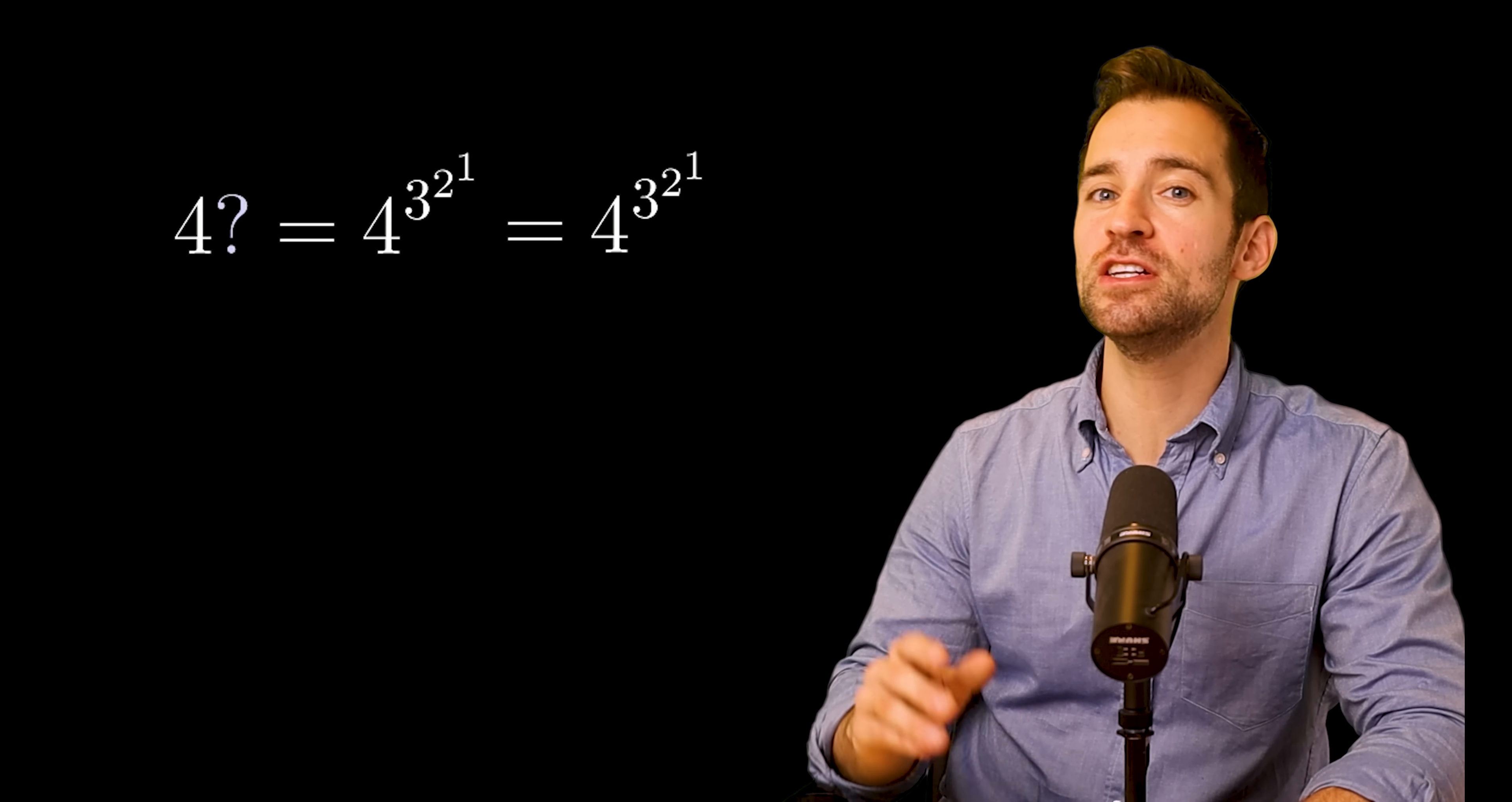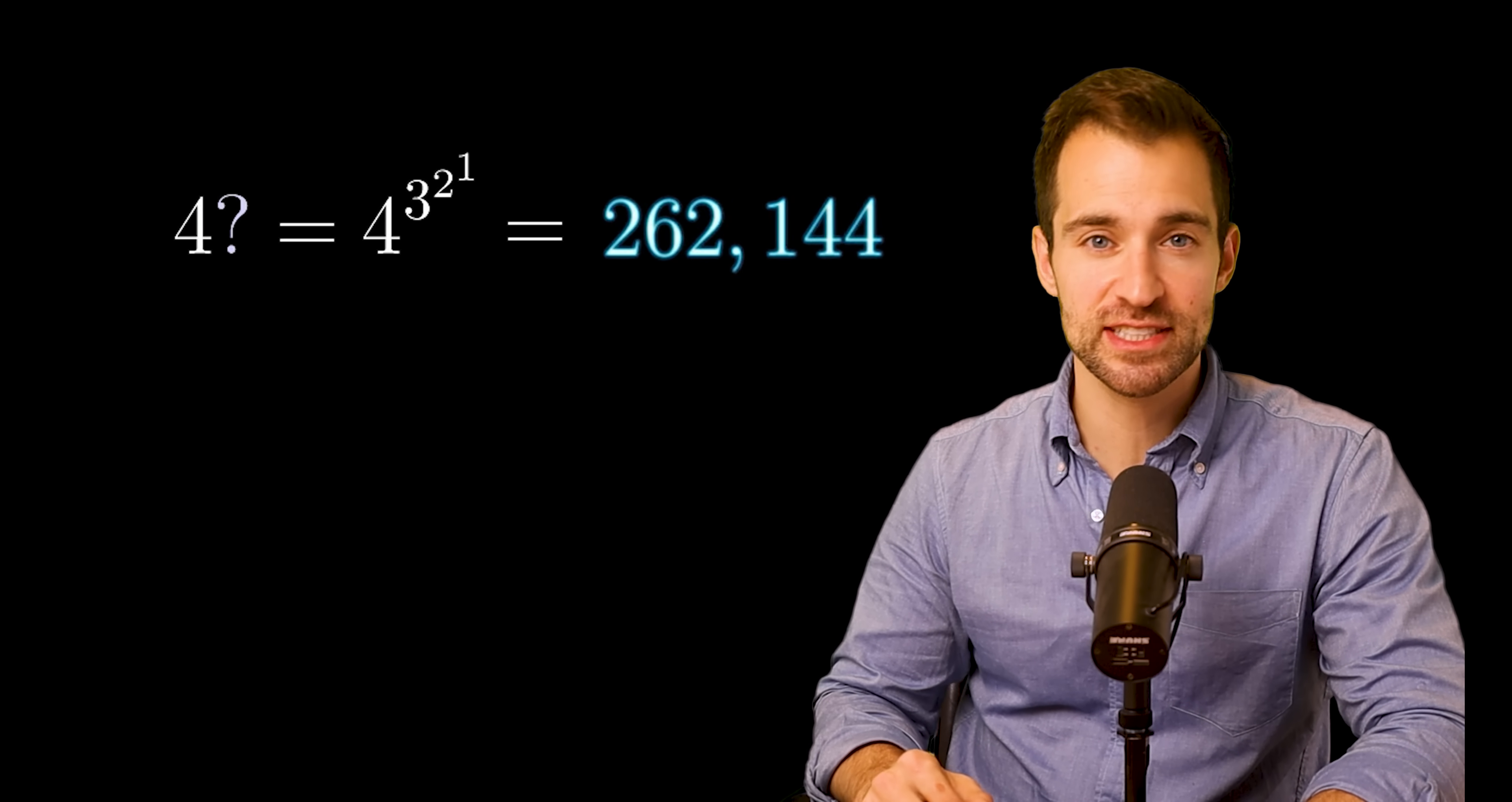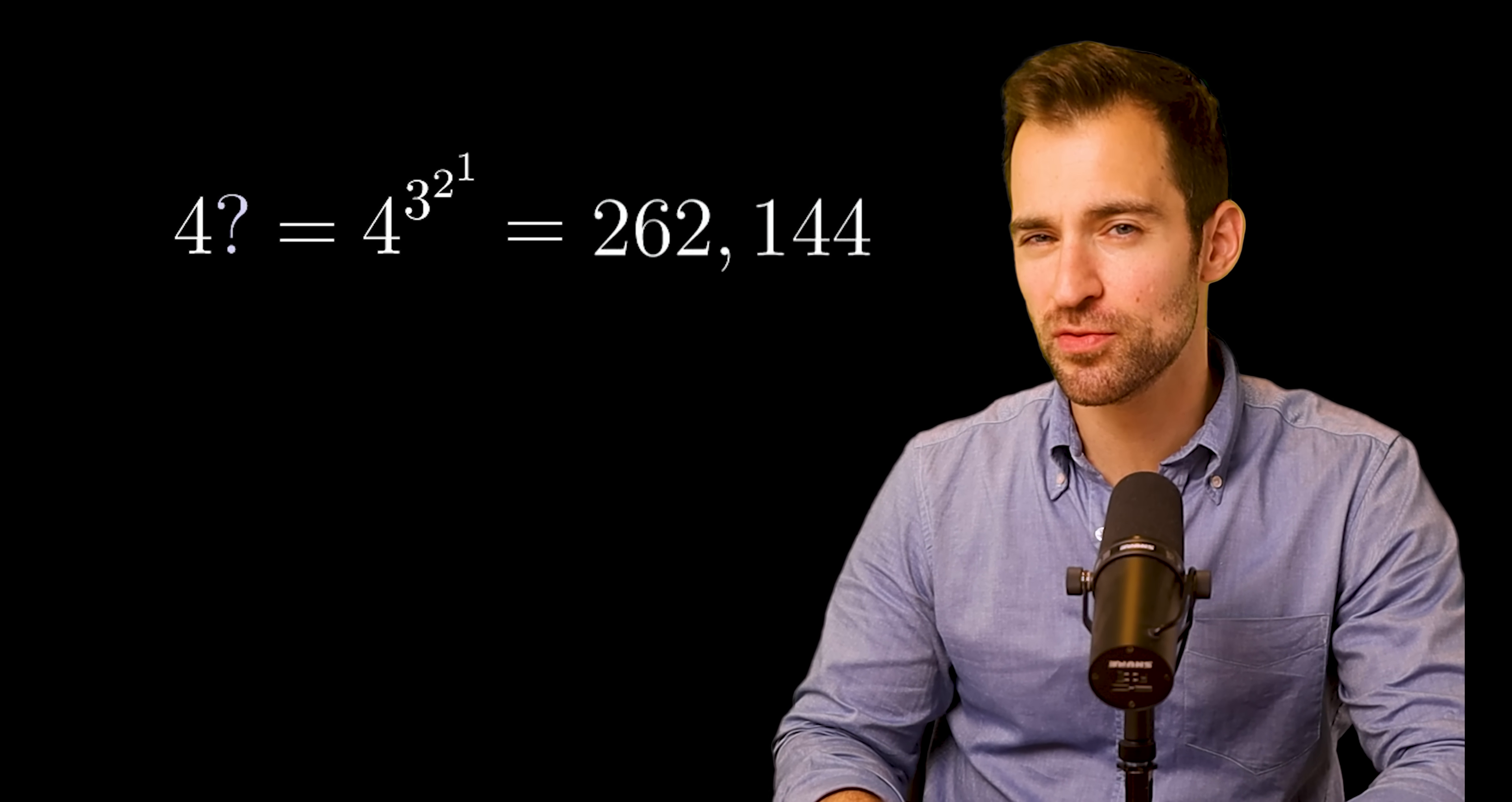I'll start by inventing some notation. Let's say a question mark means an exponential version of a factorial. So, 4 question mark is 4 to the 3 to the 2 to the 1. And we evaluate from the top right downward, giving us about 262,000. A pretty big number from 4.